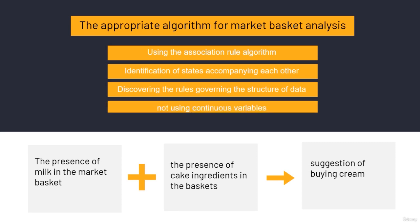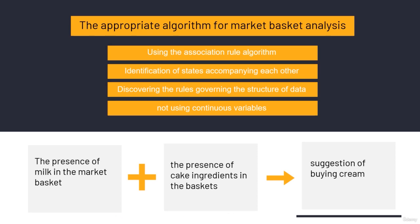Just remember that this algorithm can't use continuous variables — it has a particular nature that doesn't work with continuous variables. One thing this algorithm can do is: if you have milk in your shopping cart and other ingredients for baking a cake, it can suggest you buy cream too. These suggestions appear in the algorithm in the shape of patterns, saying that people who bought these items also bought this one with a certain percent of possibility. The statements suggested by the algorithm are called an item set. We'll see this in a demo.